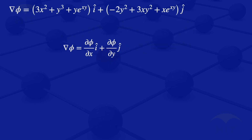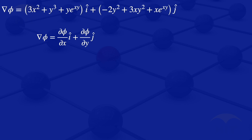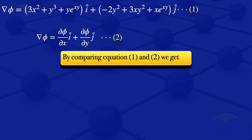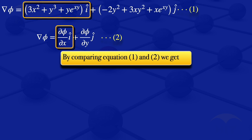We now have two equations with grad φ on the left-hand side. Label the first one equation 1 and the second one equation 2, then compare them. By equating the i-components, we get: the partial derivative of φ with respect to x equals 3x² + y³ + y·e^(xy).